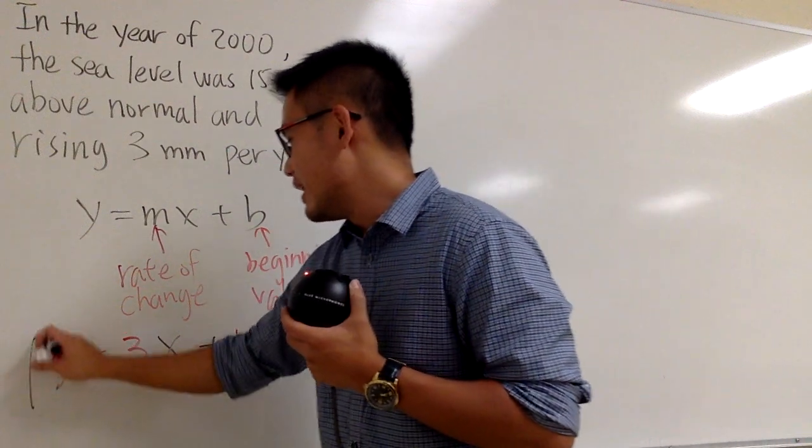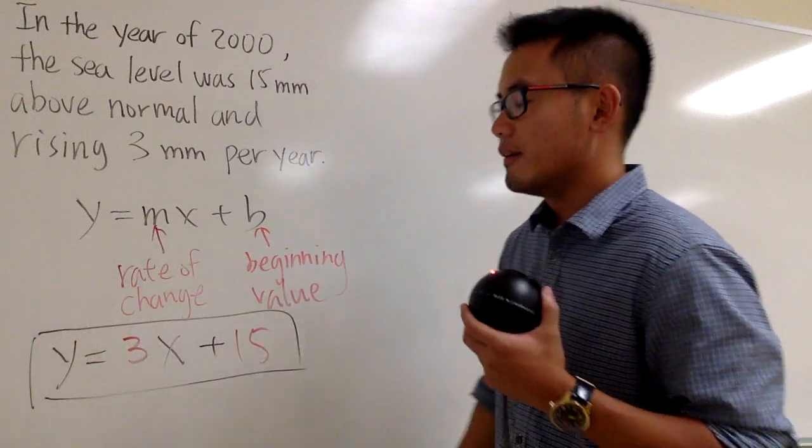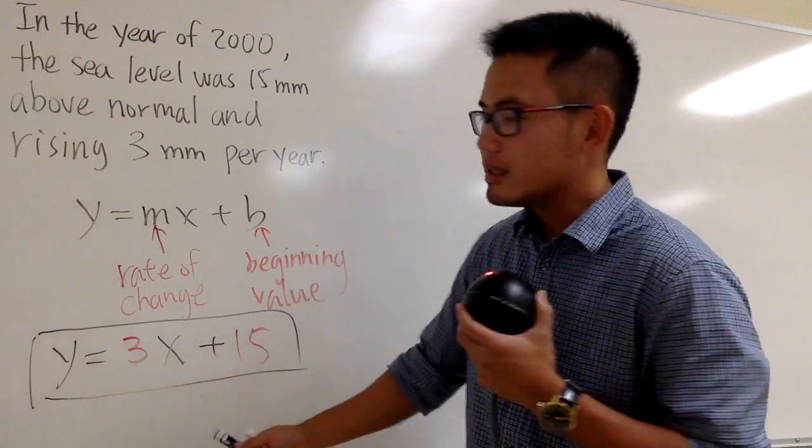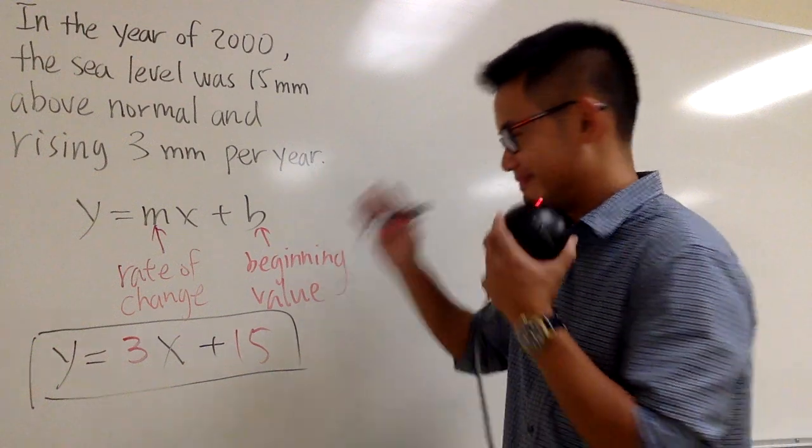So this is it. y is equal to 3x plus 15, and the x represents the number of years after 2000, and the y represents the sea level. That's it.